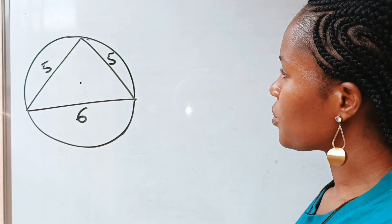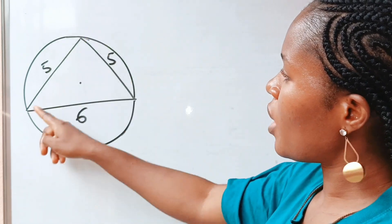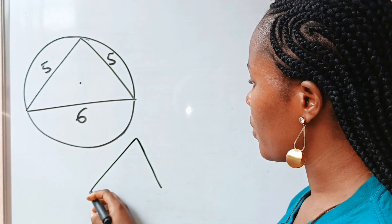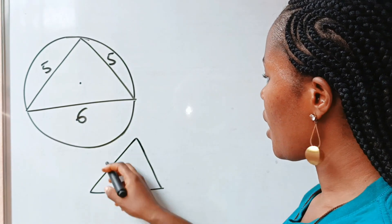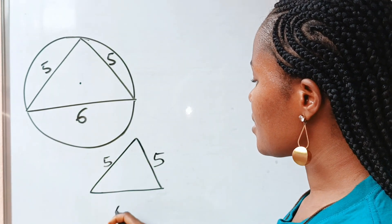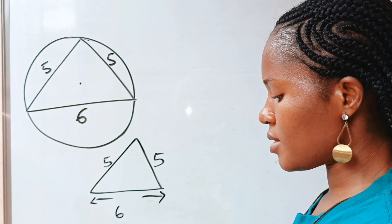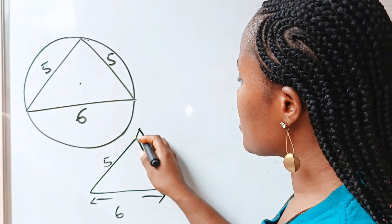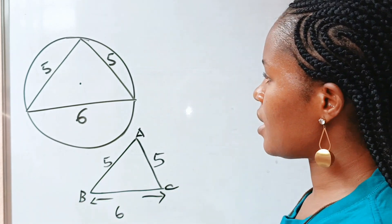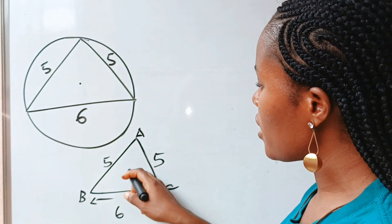First of all, remember that we have a triangle — let's draw it out. This side is five, this is five, and this is six. From here to here is six. Now let's call the vertices A, B, and C. This is the center of the circle.